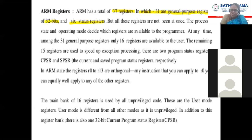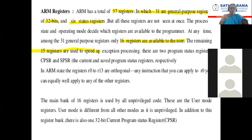Totally 37 registers are there. Among them, 31 are general purpose registers available to the user — but not all registers are available to the user. Only 16 registers are available. The remaining 15 registers are mainly used to speed up the processor. If the user wants, they will use only 16 registers.